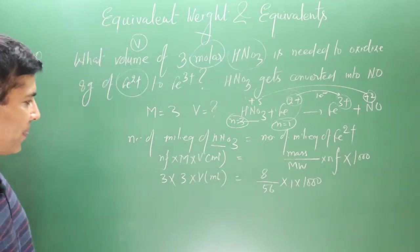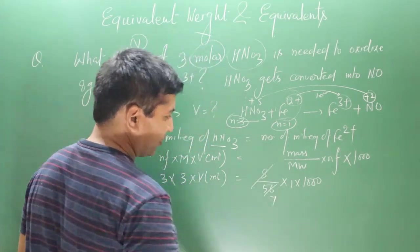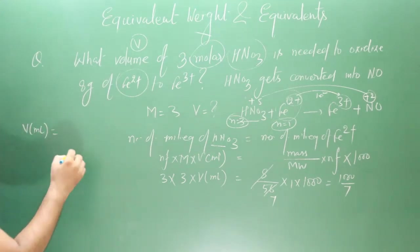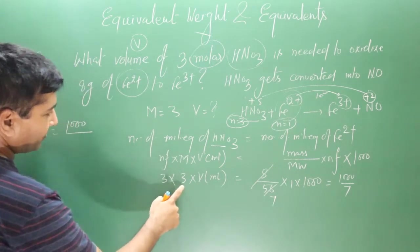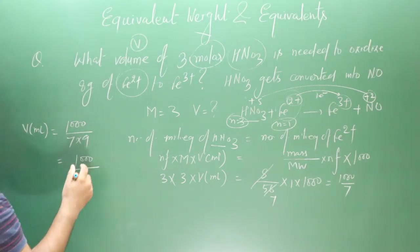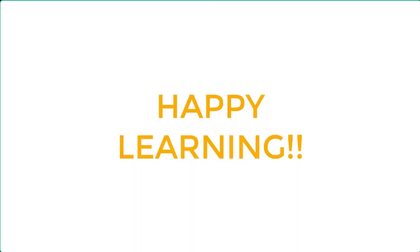Simplifying: volume = 1000 / (7 × 9) = 1000 / 63 ≈ 15.87 mL, approximately 16 mL. So the volume of 3 molar nitric acid needed is approximately 16 mL.